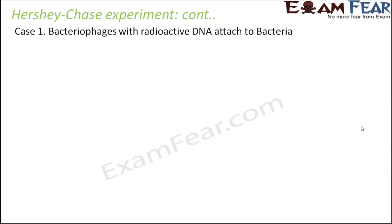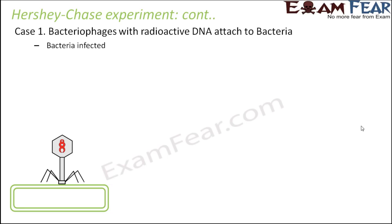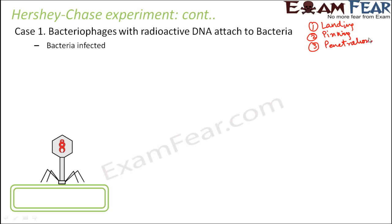These two types of bacteriophages were grown — one in radioactive sulfur so it has radioactive protein, and the other in radioactive phosphorus so it has radioactive DNA. In the first case, the bacteriophages with radioactive DNA were brought in contact with bacteria. As soon as a bacteriophage comes in contact with the bacteria, three simple steps take place: landing, pinning, and penetration. First it lands on the bacteria, then it pins itself and gets fixed on the surface, and then its tail starts to penetrate inside — that is how it infects the bacteria.